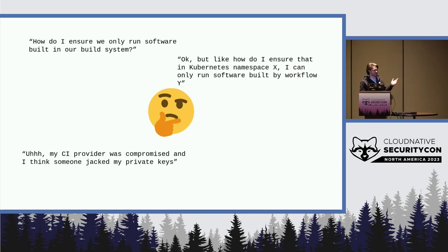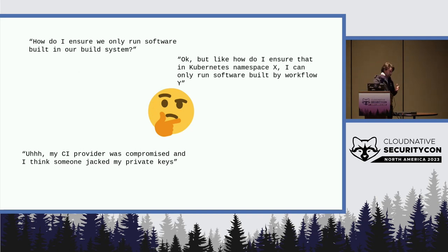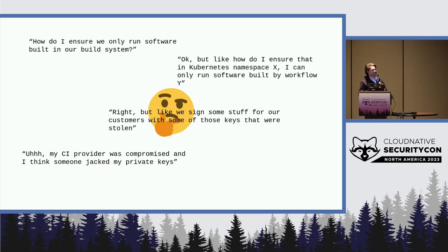Your CI provider will probably get compromised at some point and people will take your private keys. When that happens, you need to create a new key pair, put the new public key in place to verify against both public keys, sign with the new private key, distribute new builds everywhere, and then remove the old public key from the verification policy. It's work, but it happens. And if you were signing things for customers and they were verifying with those keys, it starts to get rough — you have to deal with the fact that you just busted your customer's trust a little.